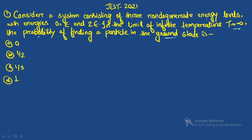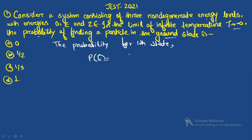This is a direct formula-based question. The probability for the i-th state is P = e^(−βε_i) / Z, where Z is the partition function given by Z = Σ e^(−βε_i).